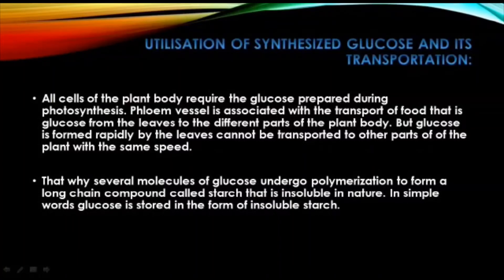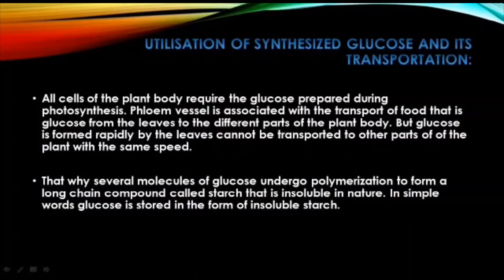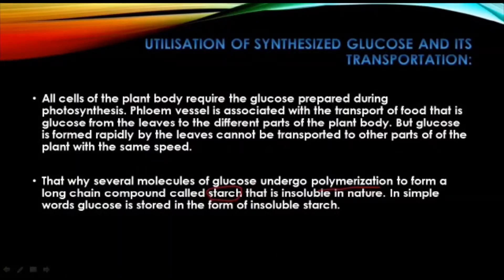Glucose is formed rapidly by the leaves — the process of photosynthesis is very fast. The number of glucose molecules produced is much greater than the rate of utilization or conversion into starch, so it cannot be transported at the speed at which it is produced. The pace of production and pace of utilization of glucose is imbalanced. That is why several molecules of glucose undergo polymerization to form a long chain compound — starch — which is insoluble in nature, meaning glucose is stored in the form of insoluble starch.